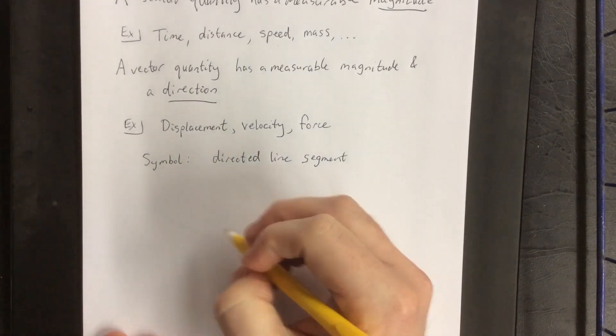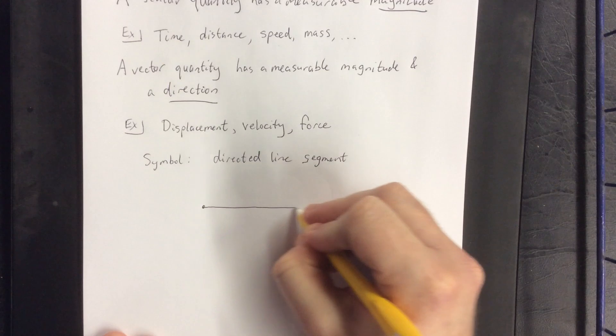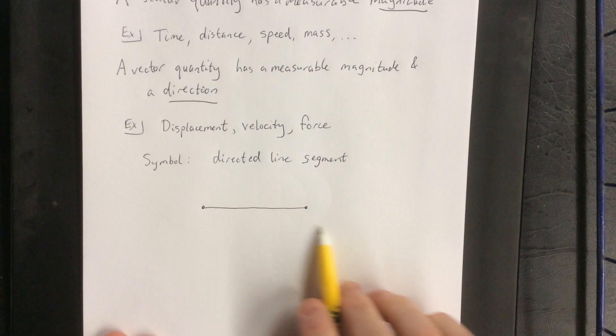A directed line segment, well, let's start with a line segment. A line segment starts at one given point, goes in a straight line, and then ends at another point. This would be considered a line segment.